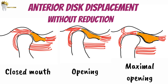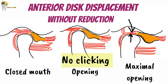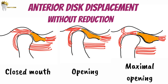In the case of anterior disc displacement without reduction, the condyle is unable to snap back underneath the disc, so the disc doesn't reduce back on top of the condyle while opening the mouth. You can see that when the condyle begins to translate forwards — when the jaw is just opening — the disc remains anterior to the condyle, and even at maximal opening it is still anterior to the condyle. The posterior attachment tissue is interposed between the condyle and the fossa. So in this case, there will be no clicking, because the condyle cannot go over the posterior band.